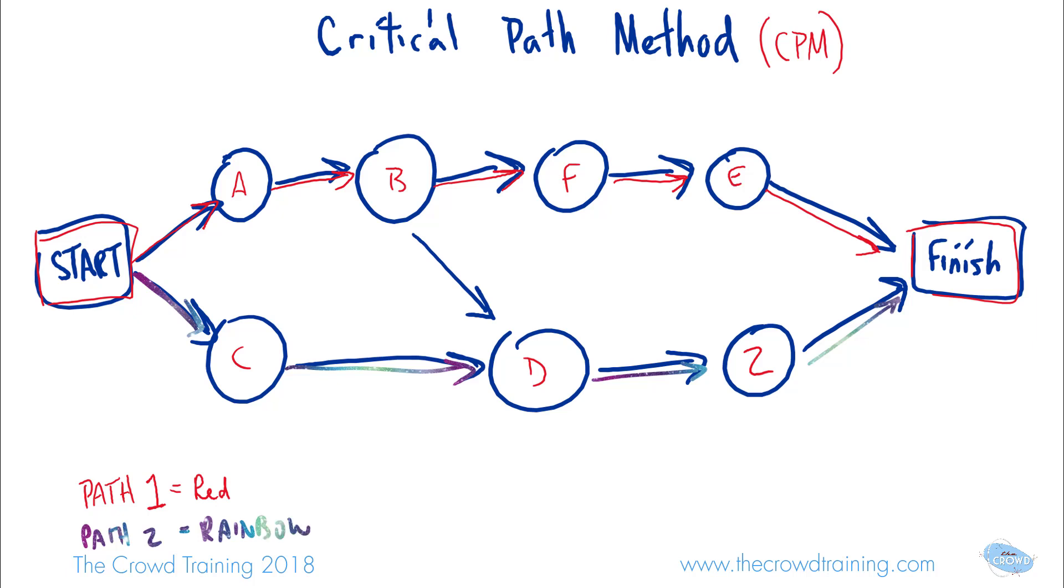Then number three, I'll pick one more color here. Maybe I'll make it a highlight so it stands out. We're going from A to B, just like we did in the first path, but in this one, we're going to go down to D, then to Z, then to finish. So that would be our path number three.